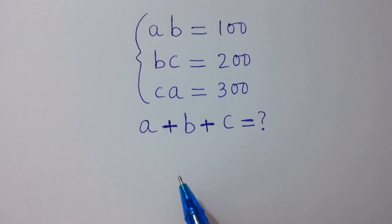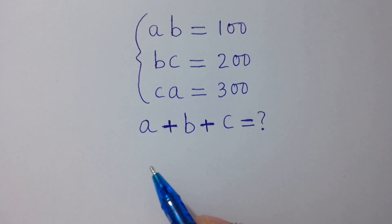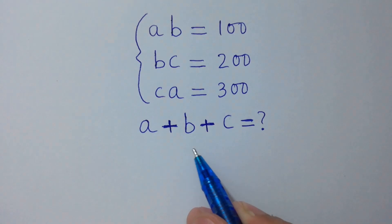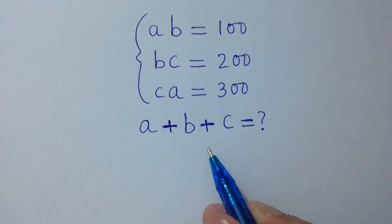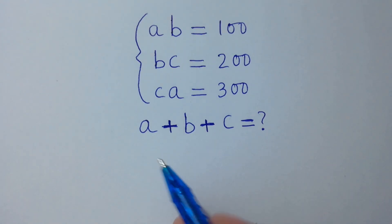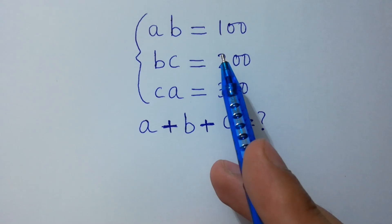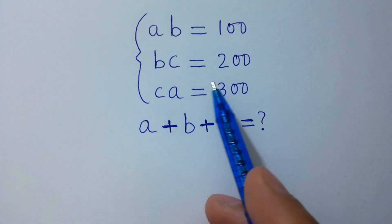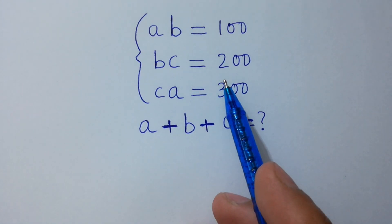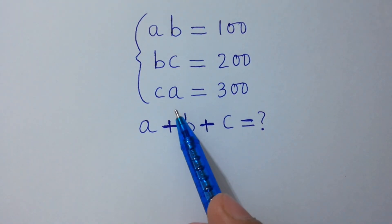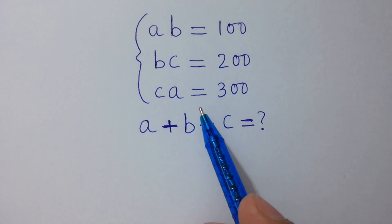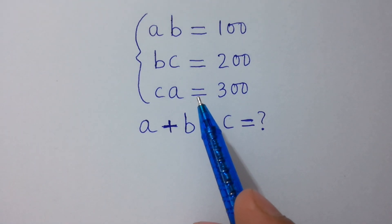Hello friends. Find the value of a plus b plus c if ab equals 100, bc equals 200, and ca equals 300. Let's solve it.